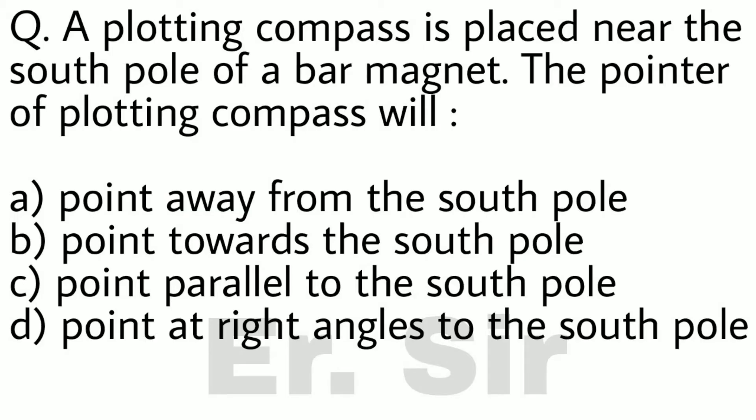A plotting compass is placed near the south pole of a bar magnet. The pointer of plotting compass will point away from the south pole, point towards the south pole, point parallel to the south pole, or point at right angles to the south pole.